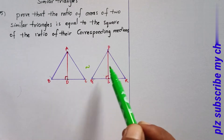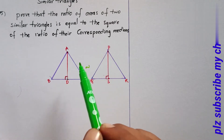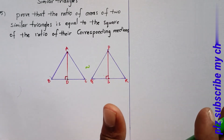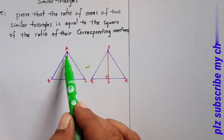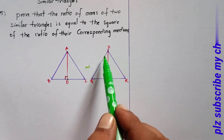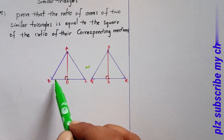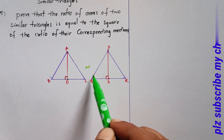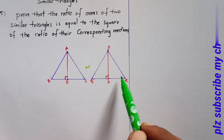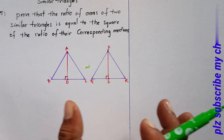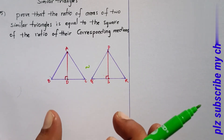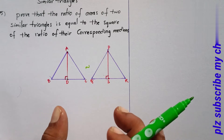Two triangles are similar, so corresponding angles are equal: angle A equals angle P, angle B equals angle Q, and angle C equals angle R.